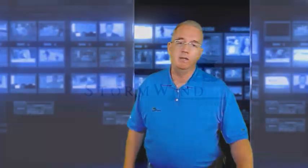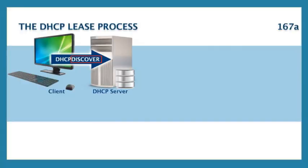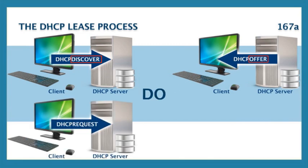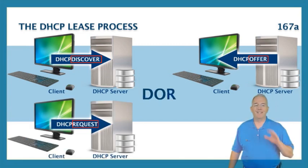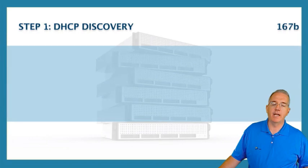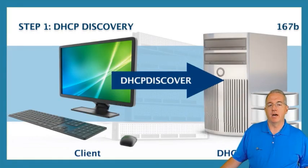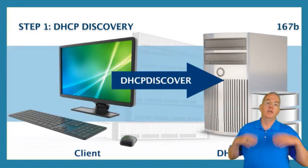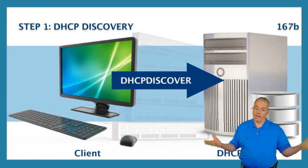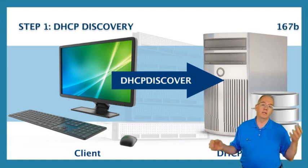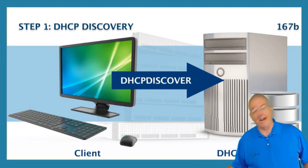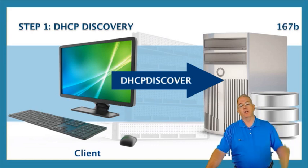This is all based on broadcast. We briefly mentioned it — it is the Discover, Offer, Request, Acknowledge — the DORA process. It is important that you understand exactly how this process works, so let's break it down piece by piece. The first part is DHCP Discovery. What DHCP Discovery does is it says: do I have an IP address assigned to me? No. Am I a DHCP client? Yes. So I broadcast out to the IP address of 255.255.255.255.